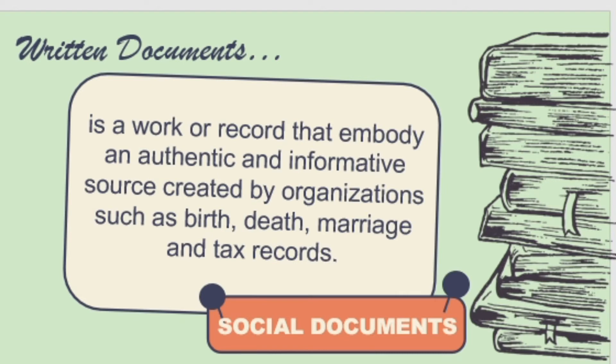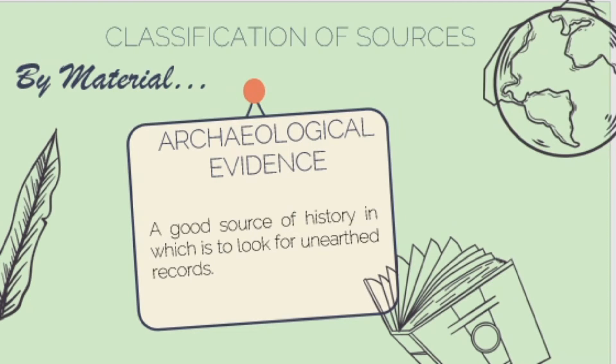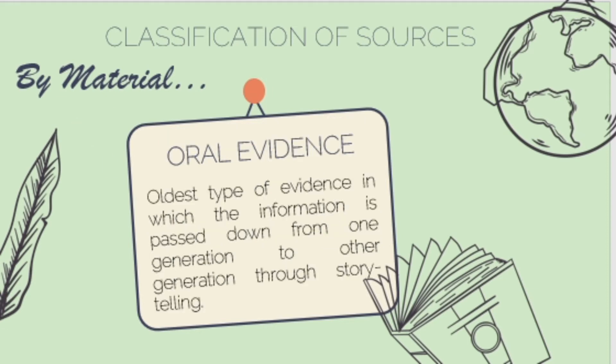The last type under material classification is archaeological evidence or material remains, which are also good sources of history. Archaeological evidence includes artifacts, jewelry, pottery, sculptures, structures, and many others. For instance, historians and archaeologists can determine that dinosaurs or certain now-extinct animals existed based on the fossils and remains found — these confirm that those animals were existing at a certain time and in a certain place.